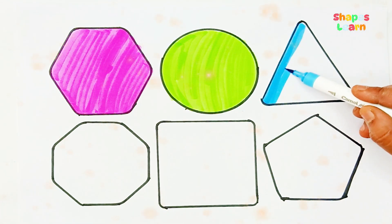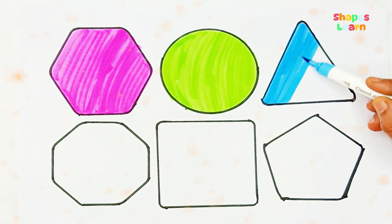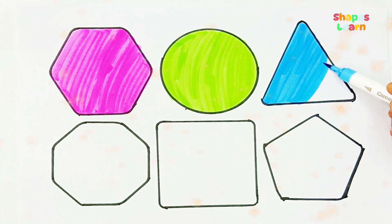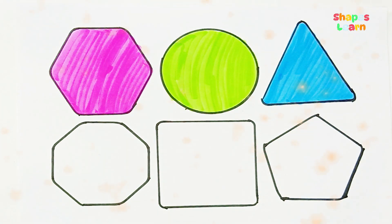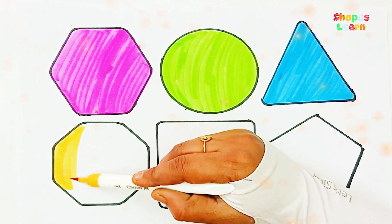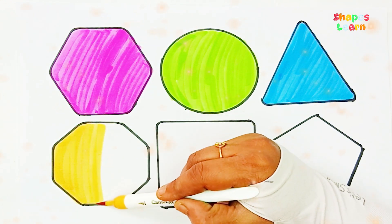Sky blue color. A, B, C, D, E, F, G. Sky blue color. H, I, J, K, L, M, N, O, P, Q, R, S, T, U, V, W, X, Y, and Z. Yellow color. Now I know my ABCs, next time won't you sing with me?